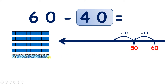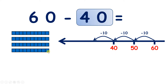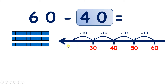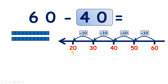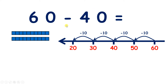Subtract two tens, and we have 40. Subtract three tens, and we have 30. And subtract four tens, and we have 20. So we've subtracted ten four times, or we've subtracted four lots of ten. So 60 take away 40 is 20.